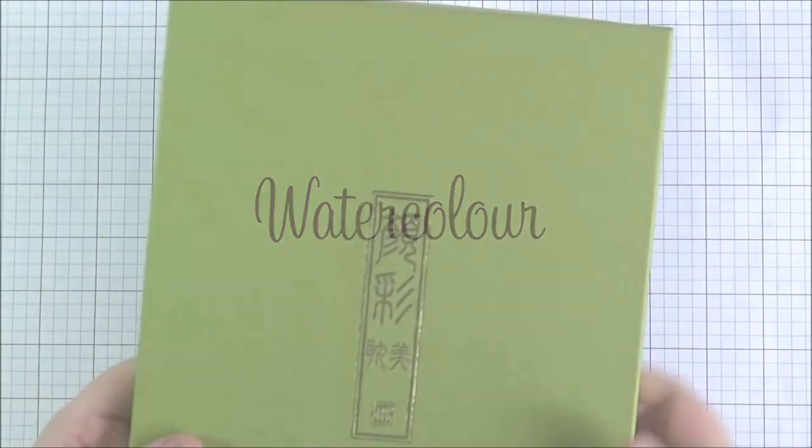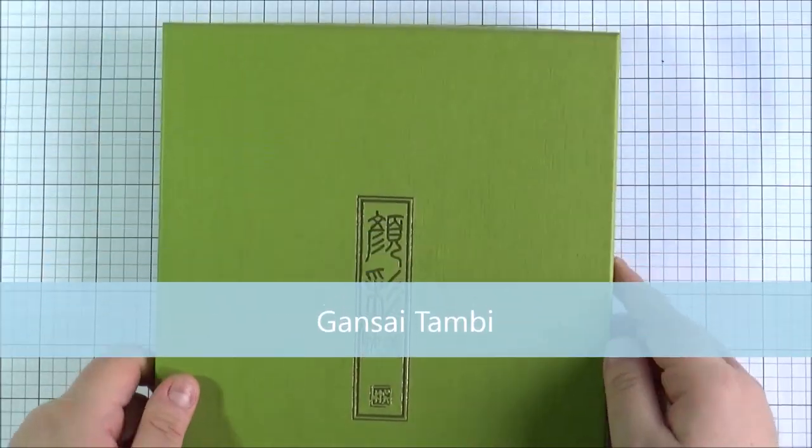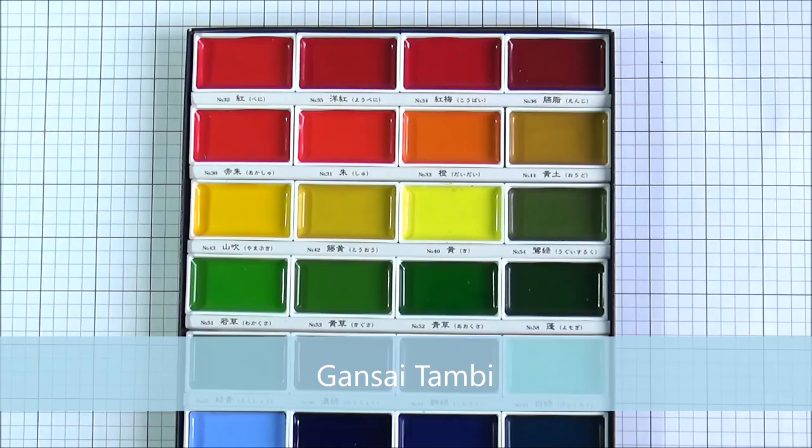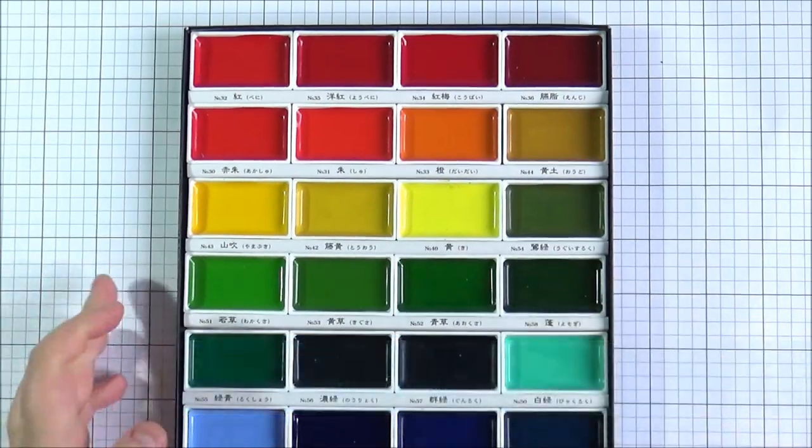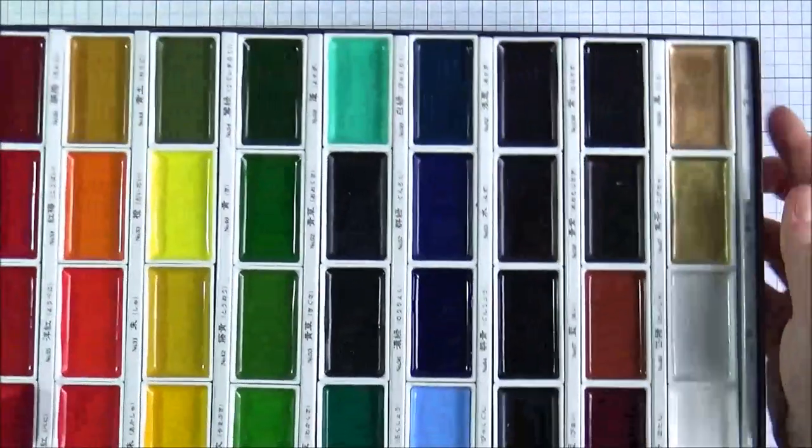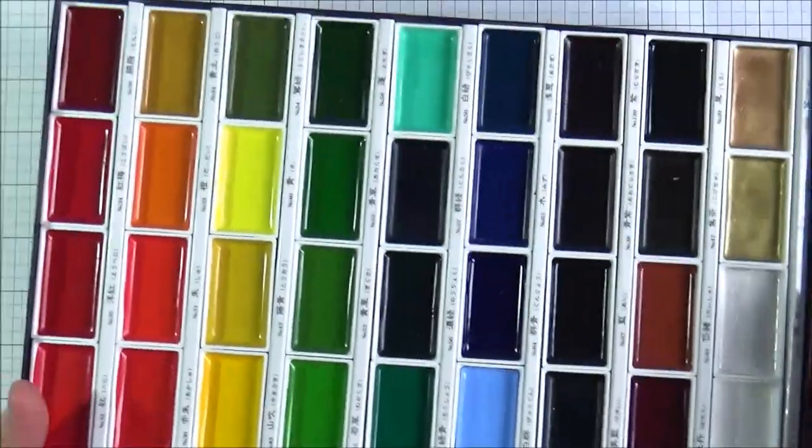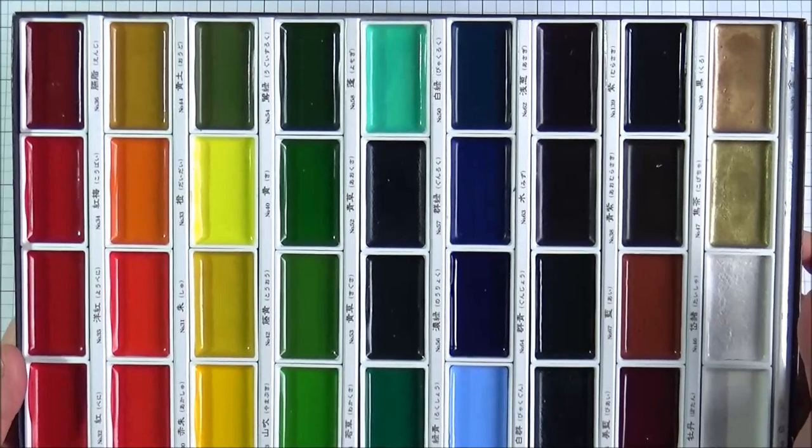So next up I'm going to talk about watercolours. I've really enjoyed watercolouring this year in particular and I got hold of the Gansai Tambi watercolours. These are a bit more of an opaque watercolour as opposed to traditional watercolours. I do really like them however and this is the 36 set and I really like the kind of turquoise and the pale blue in particular in this set.